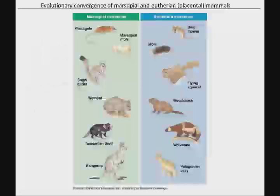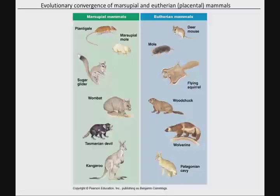Thinking about convergent evolution, you can see corresponding animals in the eutherians versus the marsupials as these different animals have occupied different niches — exploiting different resources in the environment. In Australia you might find the marsupial mole; in North America, the regular mole. The sugar glider versus the flying squirrel. The wombat versus the woodchuck. The Tasmanian devil versus the wolverine. Evolution is working towards what's best suited for a given environment, so if the environment is the same, you would expect similar characteristics to arise.